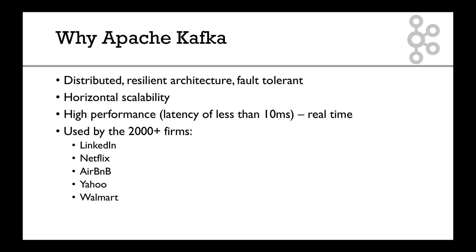Apache Kafka on top of decoupling does a little bit more. It is distributed with a resilient architecture and fault tolerance, because you have many servers. There is also horizontal scalability, which means you can add servers and your system will scale as you add them. It's also really high performance — latency is observed to be less than 10 milliseconds, so it's pretty much real time.